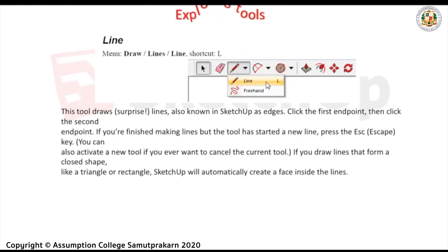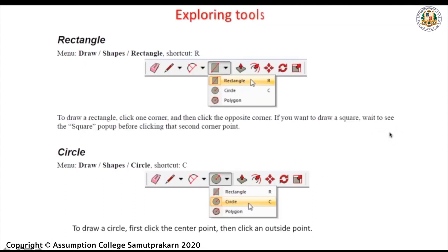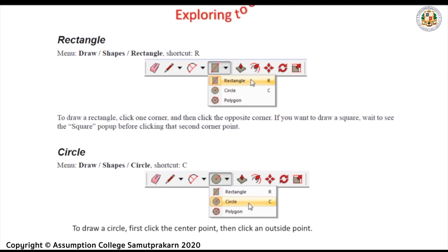Now let's go to the Line tool. This tool draws lines, also known in SketchUp as edges. Click the first endpoint, then click the second endpoint. If you're finished making lines but the tool has started a new line, press the Escape key. If you draw lines that form a closed shape like a triangle or rectangle, SketchUp will automatically create a face inside the line. Rectangle (shortcut key: R) — to draw a rectangle, click one corner and then click the opposite corner. If you want to draw a square, wait to see the square indicator pop up before clicking the second corner.